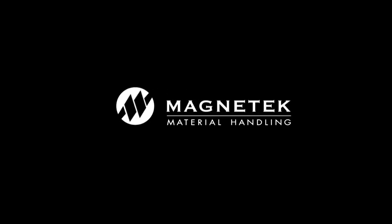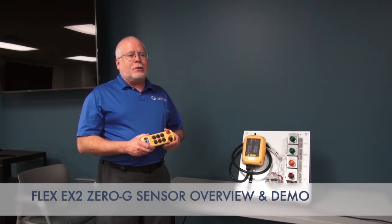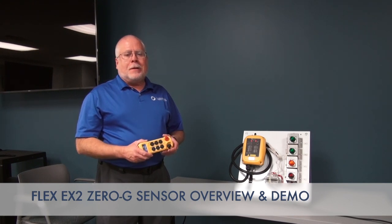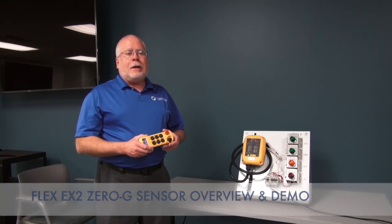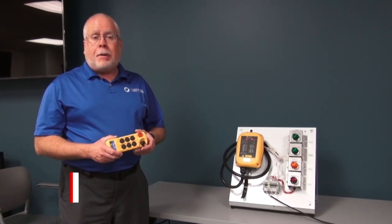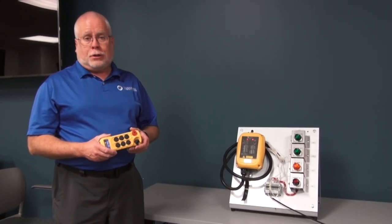The Flex EX2 product features a transmitter 0G sensor that prevents any unintended operation of the crane should the crane operator lose control of the transmitter. This is not based on impact, it's based on motion.